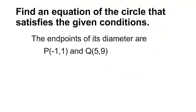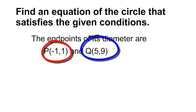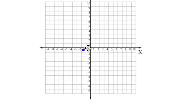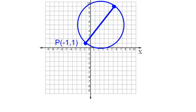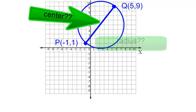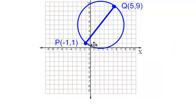Now we're going to work a problem where we are given the endpoints of the diameter of the circle. The endpoints of the diameter are P at negative 1, 1 and Q at 5, 9. Let's get a visual on that. We have the point negative 1, 1 and the point 5, 9, and these are both endpoints of the diameter. My diameter goes all the way across my circle. So I don't know what the center is, and I also don't know what the radius is.